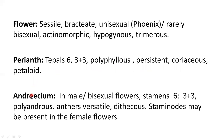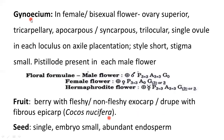The androecium: in male and bisexual flowers, stamens are six in number, in two whorls of three each. They are free, so polyandrous, and anthers are versatile and dithecous. Staminodes may be present in the female flowers. Gynoecium: in female and bisexual flowers, ovary is superior, tricarpellary, syncarpous — sometimes it may be apocarpous — trilocular, and each locule with a single ovule on axile placentation. Style is short, stigma is small, and pistillodes may be present in the male flowers.